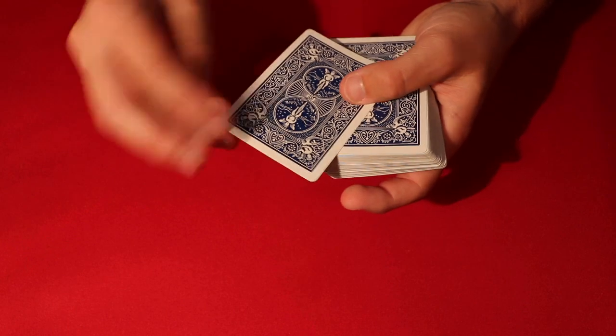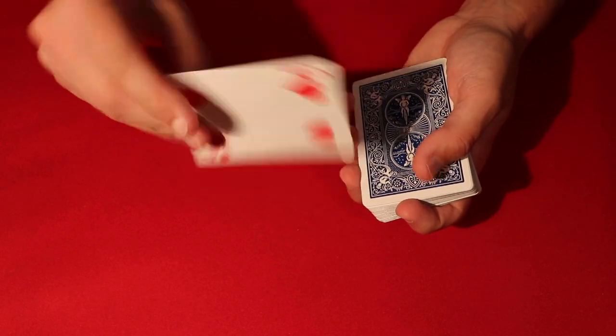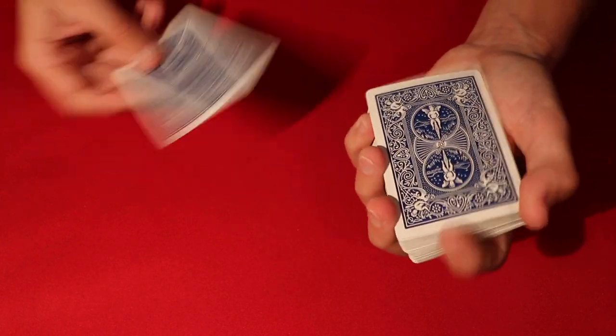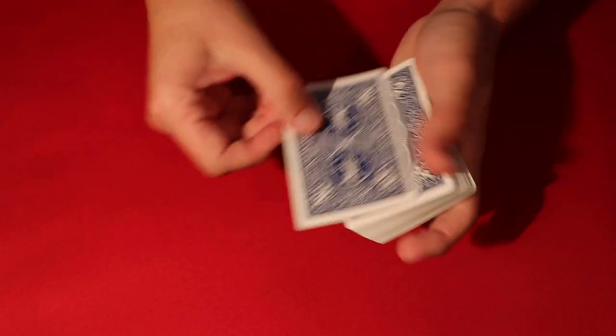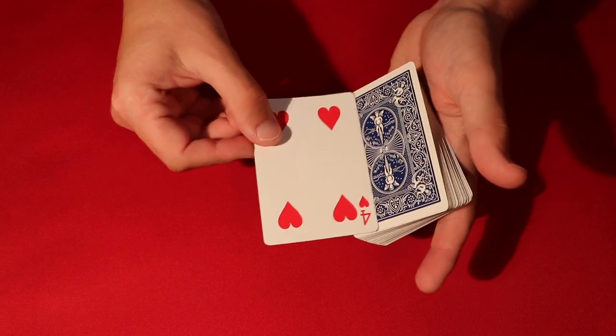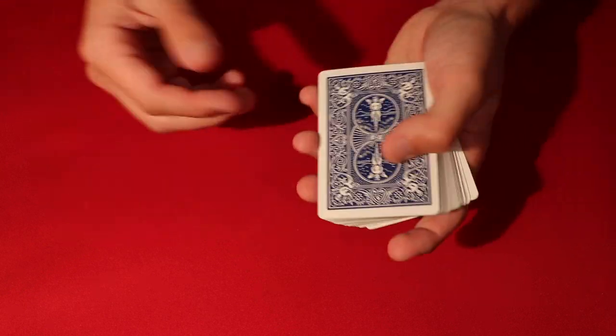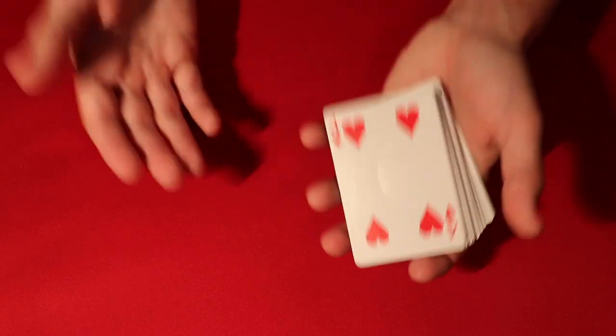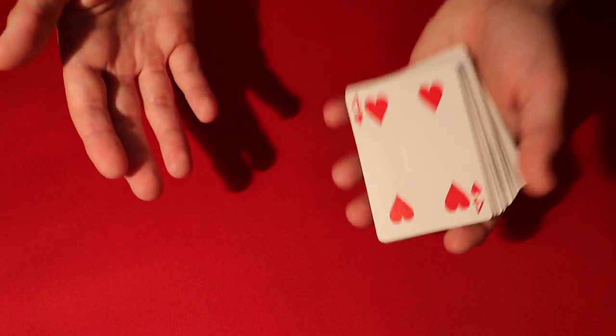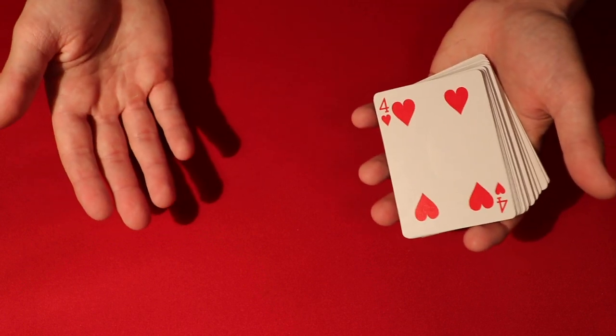So at this point, what I do is a Marlow tilt, and I'll leave a link on the screen for that as well. Essentially, all you're doing is putting that card in the second position of the deck. So I didn't do anything special. I just put it in the second position, but made it look like I was putting it in the middle of the deck. So I'll leave a link for that. Basically, you do a double lift and a Marlow tilt, and then from here, you can move on to the next step.